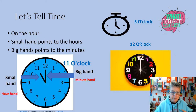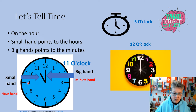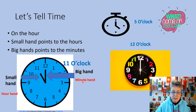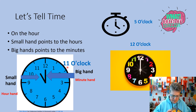On the hour. The small hand points to the hours — this is the hour. The big hand points to the minutes. When the big hand is on the twelve, we say o'clock. So this clock right here says eleven o'clock.